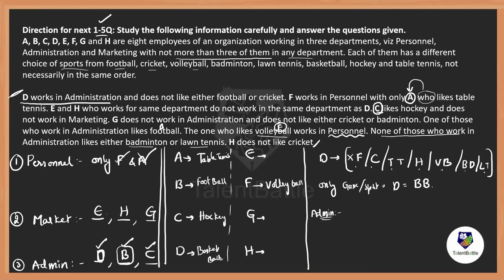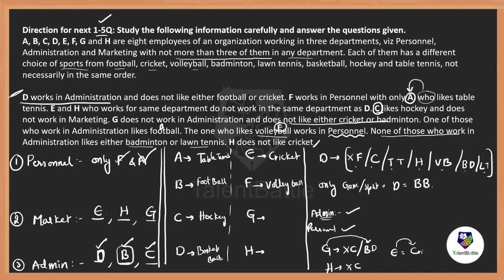In Admin: one person likes football. C likes hockey, D likes basketball — so B must like football. B = football. Admin department is done. Now for the Marketing department: E, H, G. Given G doesn't like cricket or badminton, and H doesn't like cricket, that means only E can like cricket. E = cricket. Since G doesn't like badminton, H must like badminton. H = badminton. The only sport left for G is lawn tennis. G = lawn tennis.